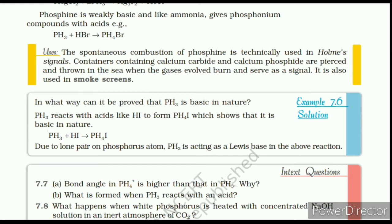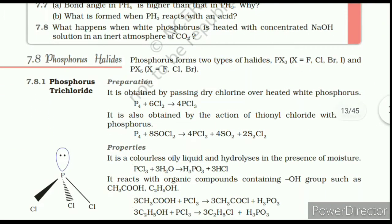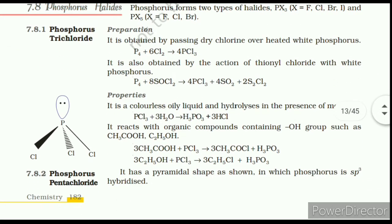7.8 Phosphorus Halides. Phosphorus forms two types of halides: PX₃ and PX₅. Phosphorus Trichloride Preparation: It is obtained by passing dry chlorine over heated white phosphorus. It is also obtained by the action of thionyl chloride with white phosphorus. Properties: It is a colorless oily liquid and hydrolyzes in the presence of moisture. It reacts with organic compounds containing OH groups such as CH₃COOH and C₂H₅OH. It has a pyramidal shape in which phosphorus is sp³ hybridized.